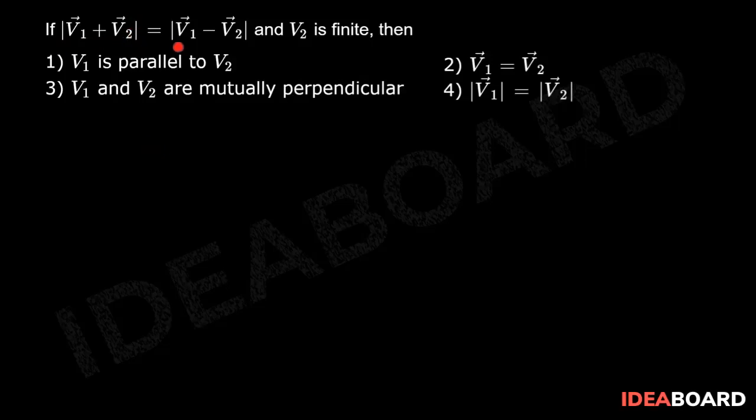If v1 plus v2 vector mod is equal to v1 minus v2 vector mod and v2 is finite, then the given condition is saying that v1 plus v2 vector mod is equal to v1 minus v2 vector mod.